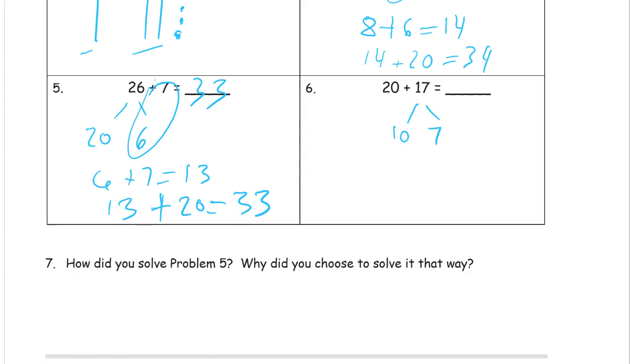But 7, that's kind of a lot of ones to draw. So I'm just being lazy, I suppose. Add the tens first. 20 plus 10 is 30. And then you'd add the 7 to the 30. 30 plus 7 is 37.